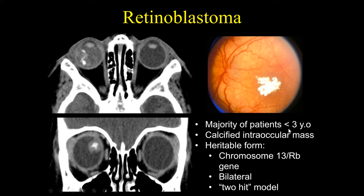Retinoblastoma: the majority arise in patients less than three years of age. It is a calcified intraocular mass. There is a heritable form that involves chromosome 13 — the RB gene. It can be bilateral, and it's felt to have a two-hit model where there are two specific mutations. This is an example of the calcified intraocular mass seen radiologically and fundoscopically.